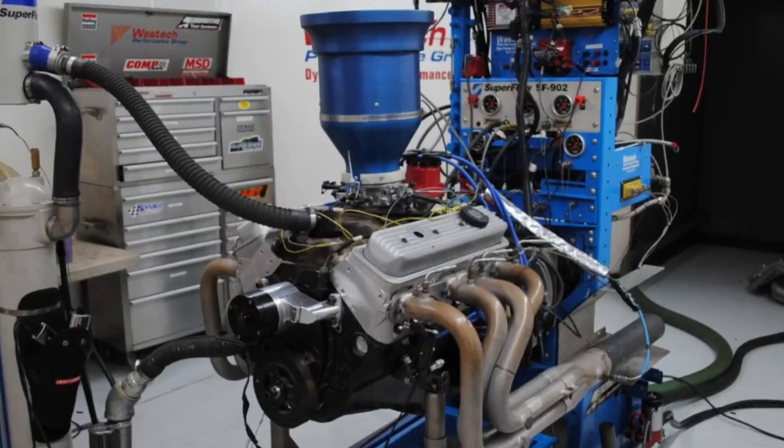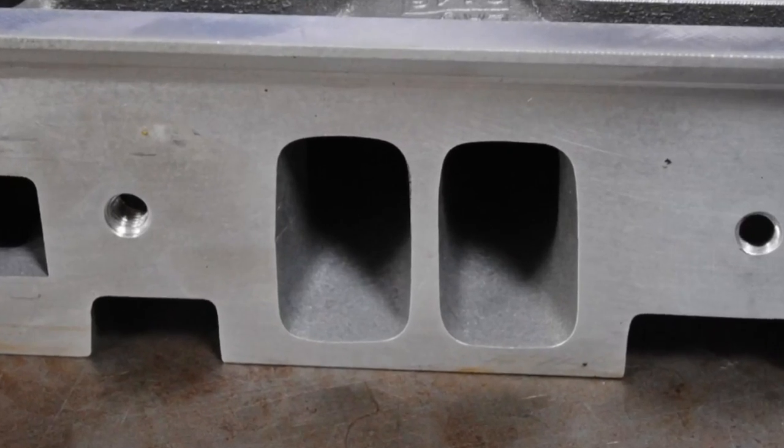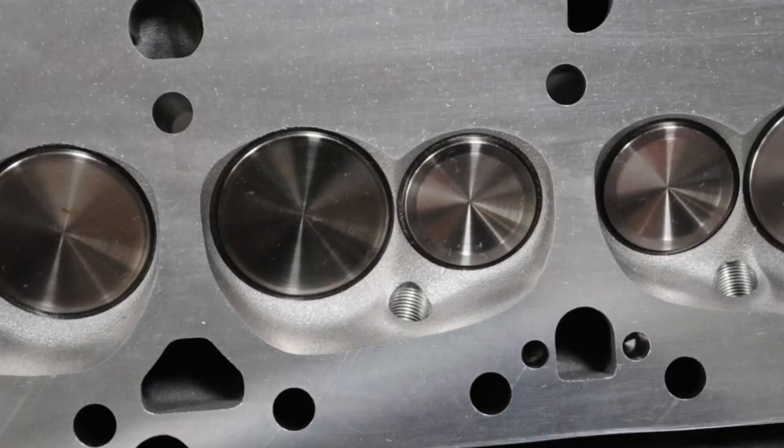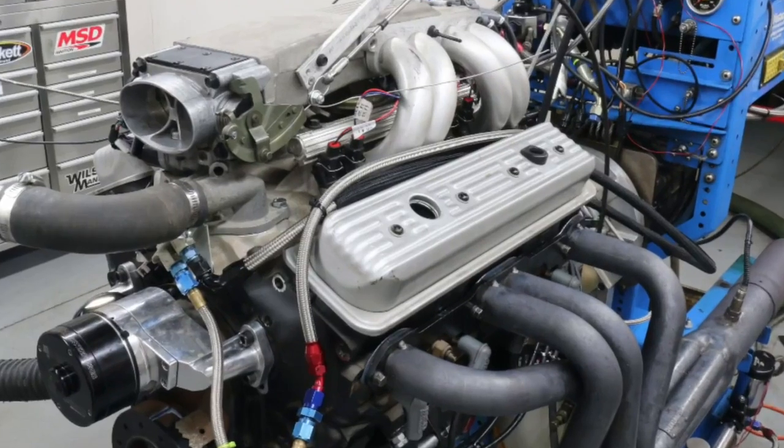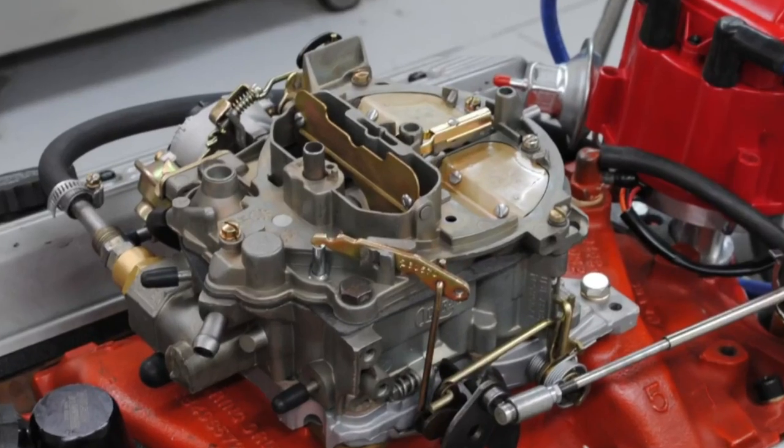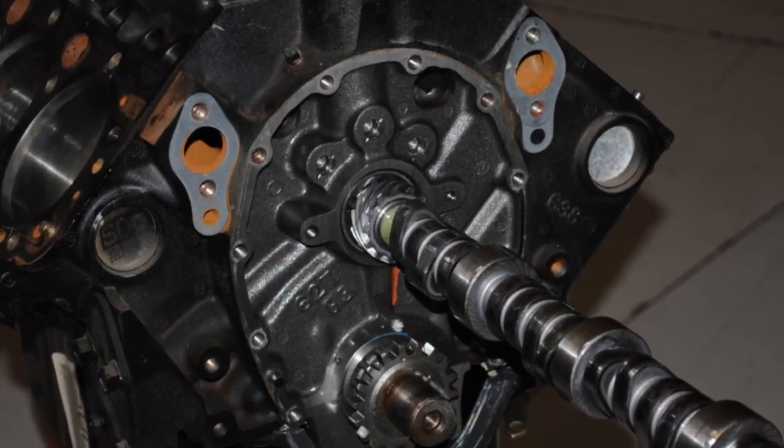Okay guys, we've got two different modified 305s. They both make the same power, but when we ran them stock, one of them ran tune port, one of them ran a quadrajet, and they made dramatically different power. My question is why?